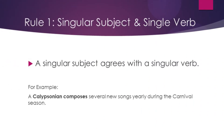Rule number one is quite familiar to all of us. It says a singular subject agrees with a singular verb. For example: a calypsonian composes several new songs yearly during the carnival season. When we talk about a singular subject, we're talking about subject of number — singular referring to one. A calypsonian refers to one person, so the form of the verb we should use is singular. Hence: a calypsonian composes several new songs during the carnival season.